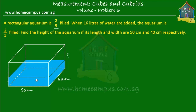When 16 liters of water were added, the aquarium became two-thirds filled. If the height is divided into three parts, the aquarium is now filled until two-thirds of the height. Let's use another color: one, two, three parts — and the aquarium is now filled until this level, that is two-thirds filled.